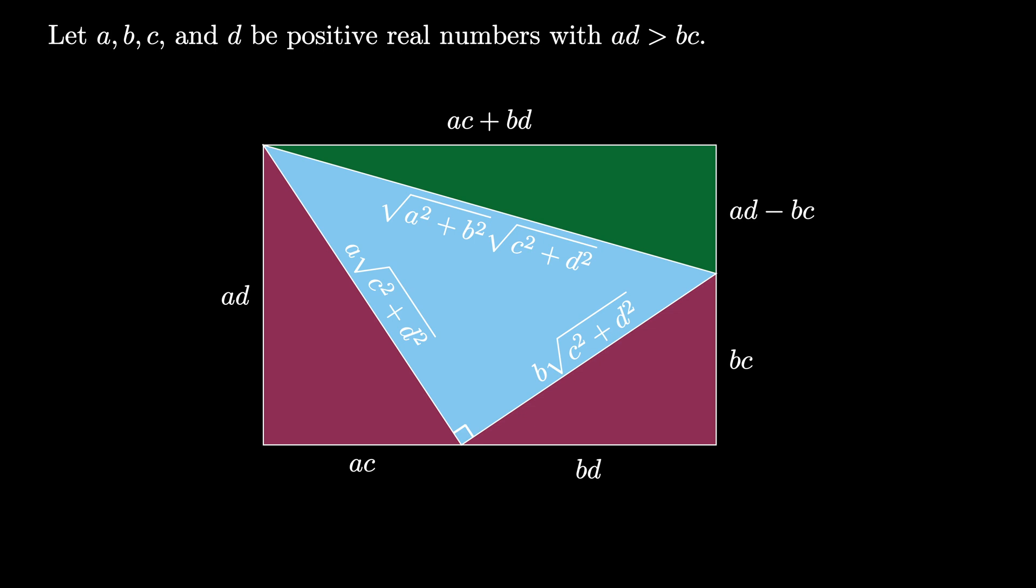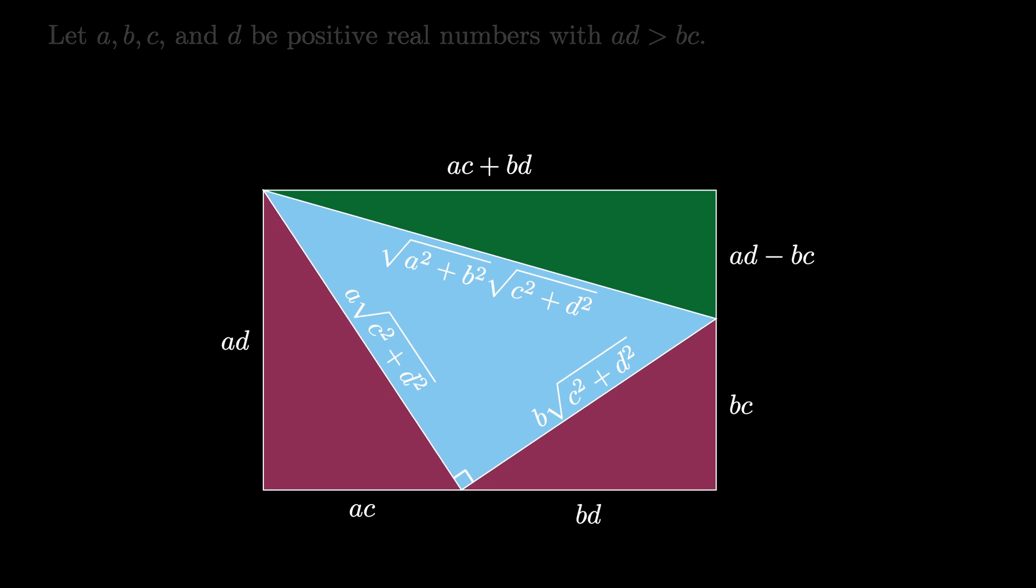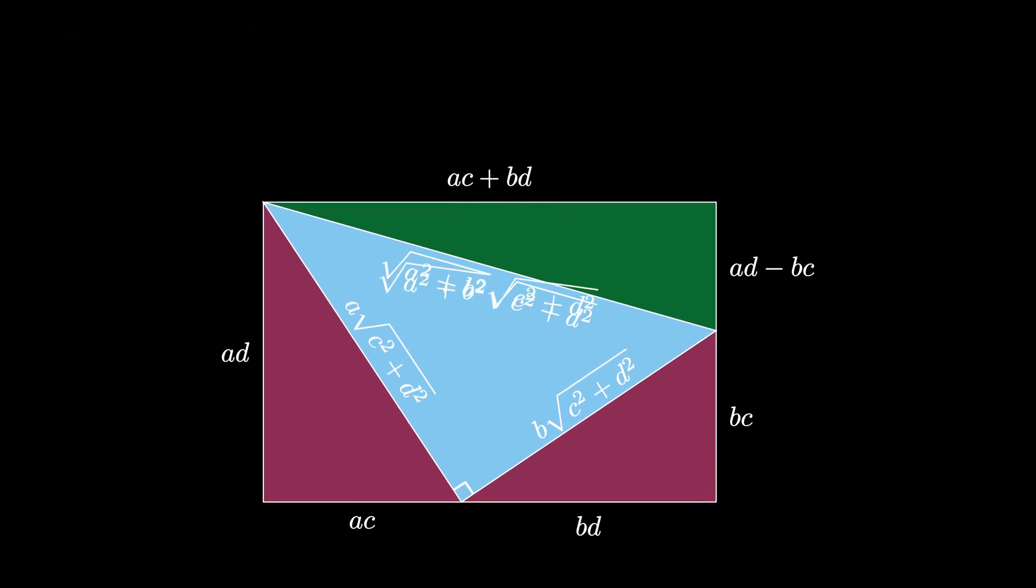But now we can apply the Pythagorean theorem one last time to this new right triangle. From this theorem we see that the square root of A squared plus B squared times the square root of C squared plus D squared all squared must equal the quantity AC plus BD squared plus the quantity AD minus BC squared.